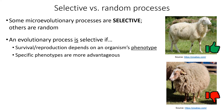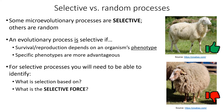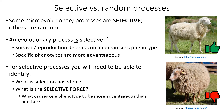Once we determine that a process is selective, there are a couple more things you need to be able to identify. First, what is selection based on? For example, does having shorter fleece make these sheep better adapted to their natural environment, or is it perhaps more attractive to potential mates? And you'll also need to be able to identify what the selective force is — what causes one phenotype to be more advantageous than another. We'll go over these ideas more as we discuss each microevolutionary process.